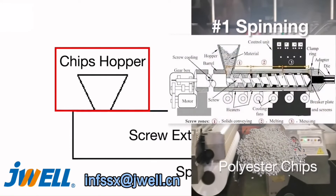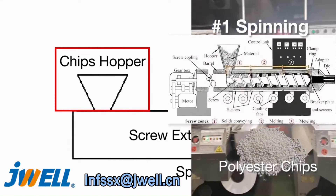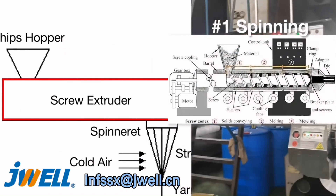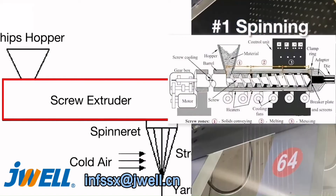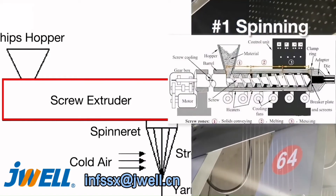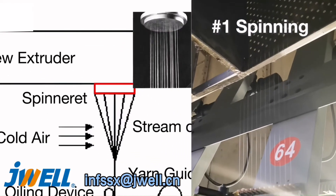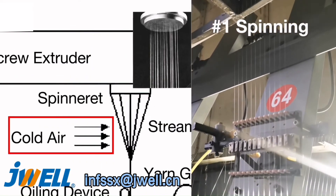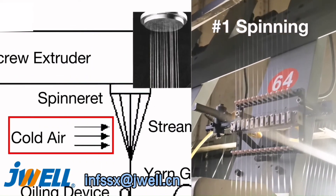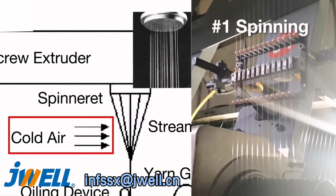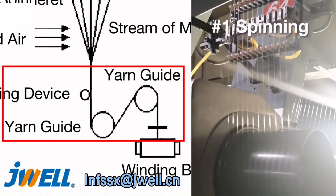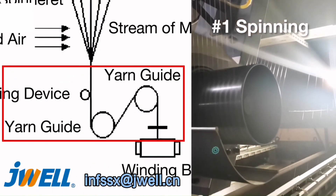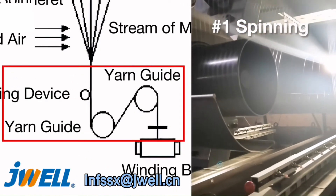The principle of the process is to feed polyester chips into the chips hopper, then melt them and ensure that the melt flows stably in the screw extruder. In the screw extruder, the melt is filtered and pressed into the spinner to spray out a thin stream of melt, which is then quickly condensed by cold air to form a solidified fiber.